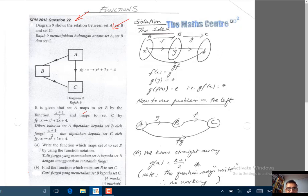It's given that set A maps to set B by the function (x+1)/2, and maps to set C by fg(x) equals x squared plus 2x plus 4.